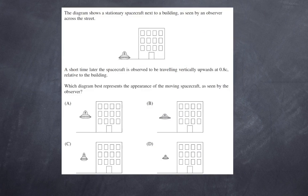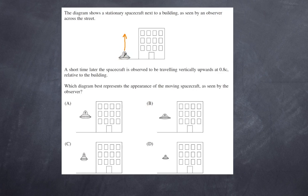A stationary spacecraft is next to a building as seen by an observer across the street. A short time later the spacecraft is observed to be traveling vertically at 0.8c relative to the building. Which diagram represents the appearance of the moving spacecraft? Length contraction only occurs in the direction of travel. Since the spacecraft is moving upward, it will appear squashed vertically but its width will not change. Therefore only B is the possible answer.